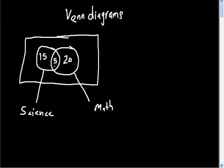The ones in the middle do both maths and science. These ones only do science, and these only do maths. If asked who does maths, you say 25, not just 20, because the question isn't asking for only maths students. Outside the circles — say 2 students — are those who do neither subject; they don't do science and they don't do maths.